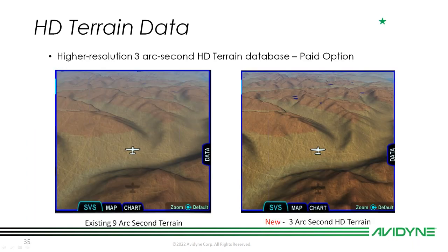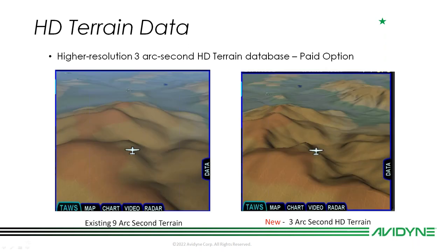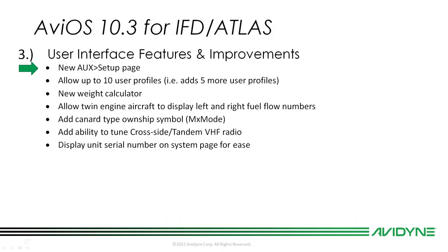On the left you can see our existing nine arc-second terrain — what you're familiar with seeing on the IFDs, both Four and Five Series. The paid option, three arc-second HD terrain, is on the right. You can clearly see there's a big difference between nine arc-second and three arc-second. This is available on both Five Series and Four Series boxes.